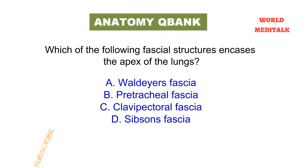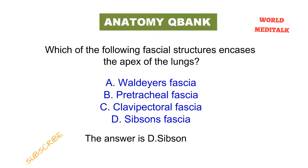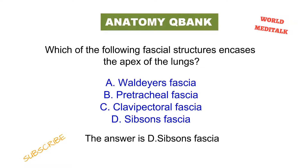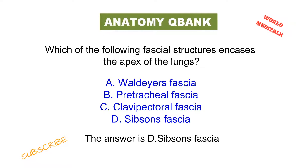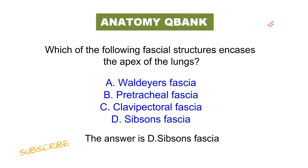Sibson's fascia overlies the apex of both lungs. This is also called the suprapleural membrane or suprapleural fascia.